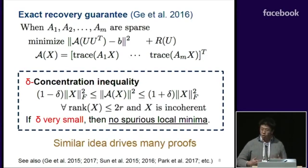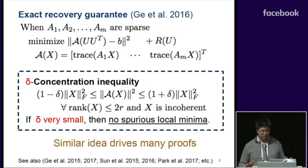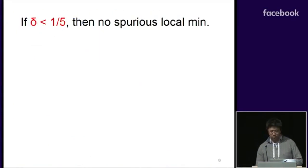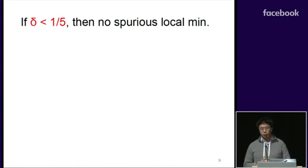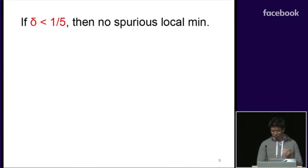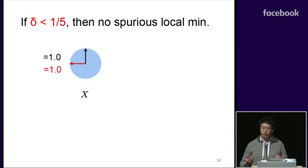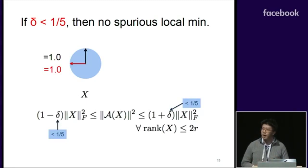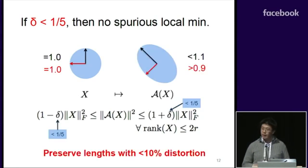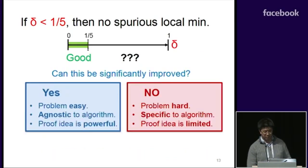Similar ideas around RIP have been used to prove more general classes of problems, most importantly in the context of matrix completion. This guarantee is actually relatively conservative. To understand what this means, it's helpful to measure the size of the matrix using the Frobenius norm. For this A operator to satisfy delta-RIP with delta less than or equal to one-fifth is to ask for the image of this map to stretch or shrink the matrix within 10%.